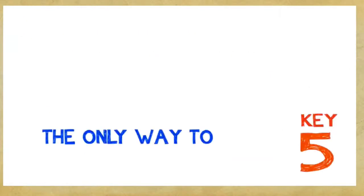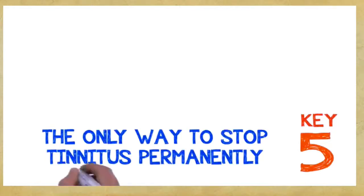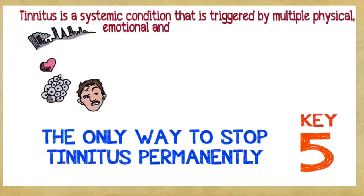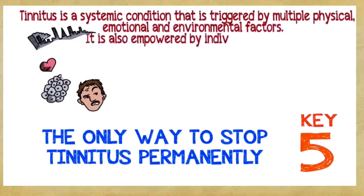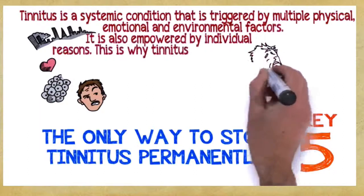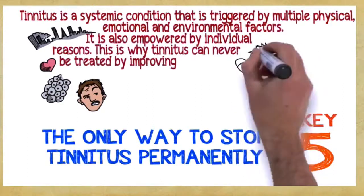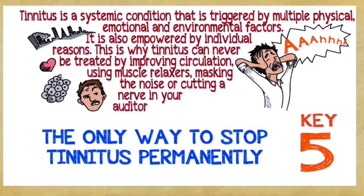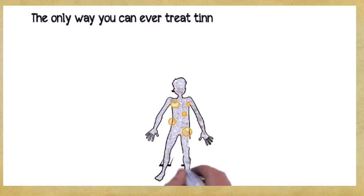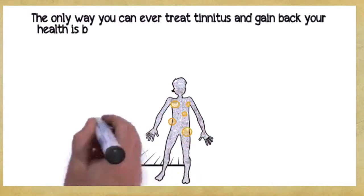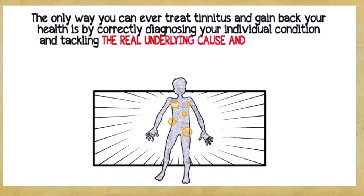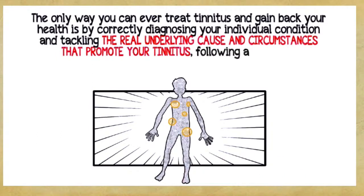Key number five: The Only Way to Stop Tinnitus Permanently. Tinnitus is a systemic condition that is triggered by multiple physical, emotional, and environmental factors. It's also empowered by individual reasons. This is why tinnitus can never be treated by improving circulation, using muscle relaxers, masking the noise, or cutting a nerve in your auditory system. The only way you can ever treat tinnitus and gain back your health is by correctly diagnosing your individual condition and tackling the real underlying cause, following a complete, multi-dimensional, holistic program.